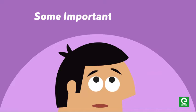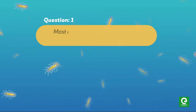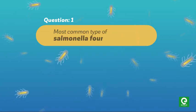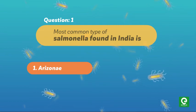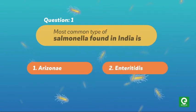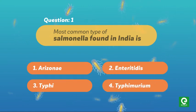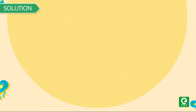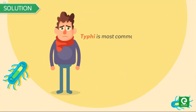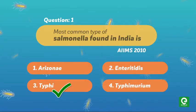Let's go through some important questions asked in medical exams. Question 1: Most common type of Salmonella found in India is — (1) Arizona, (2) Enteritidis, (3) Typhi, or (4) Typhimurium. This question was asked in AIIMS 2010. Typhi is the most common type of Salmonella in India. Hence, the correct answer is Typhi.